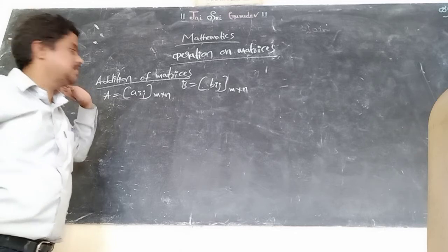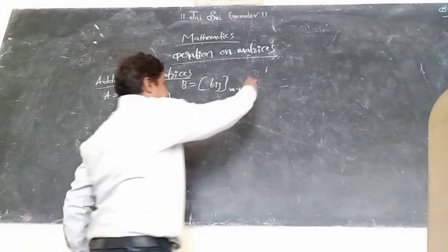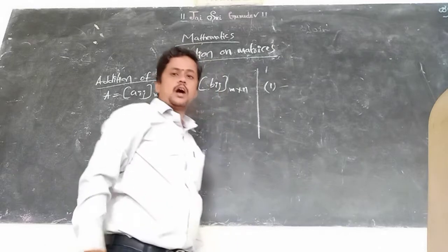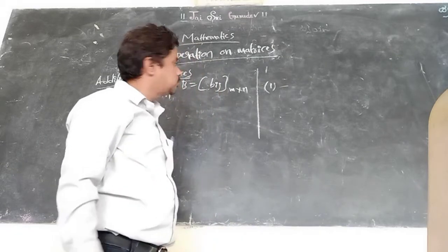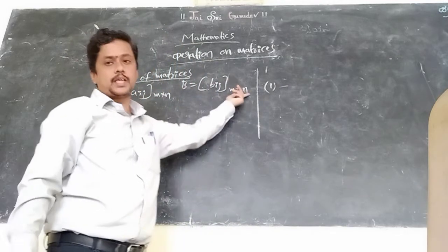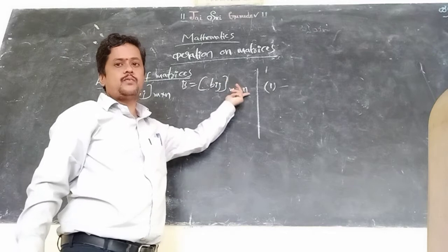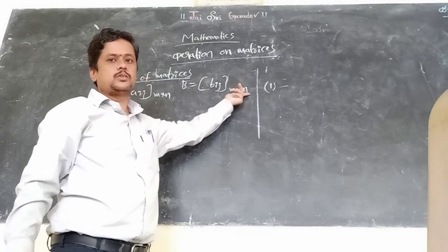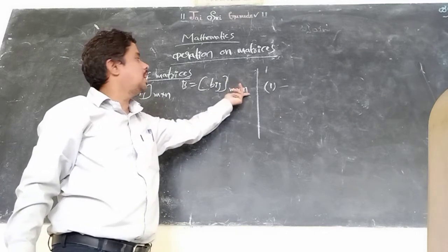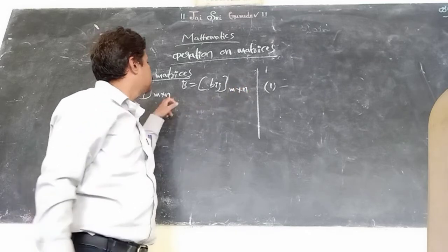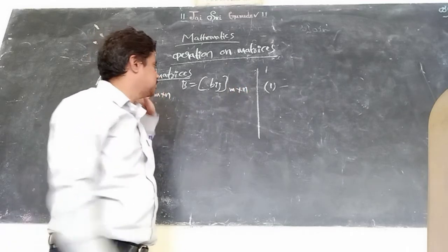What are the conditions? The order should be same. If the order is not same, we cannot do the addition of two matrices. So the first condition is: order should be same.